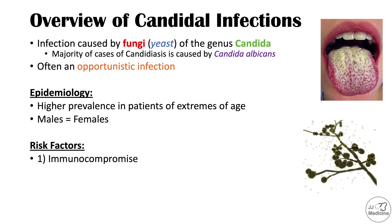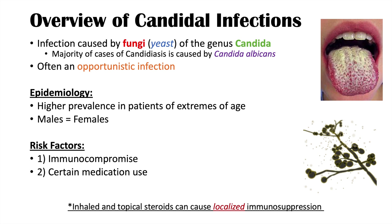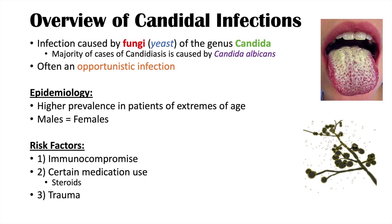Immunocompromised patient populations at risk include elderly patients, patients with chronic health conditions like diabetes, individuals with AIDS, and those on chronic oral steroid use. Certain medications, especially chronic oral steroids, can lead to decreased immune system functioning. This also includes patients who use inhaled steroids, such as asthma patients, as well as other immune-altering medications. Trauma can also lead to localized immune issues, increasing the risk of candida infections.